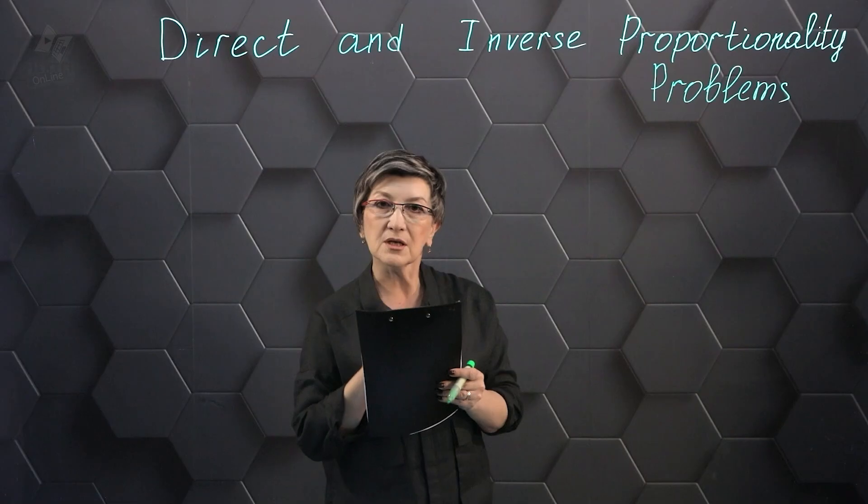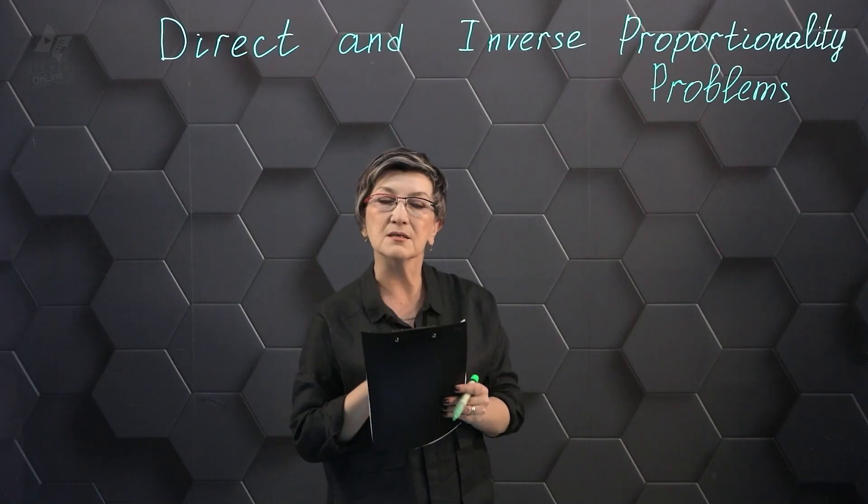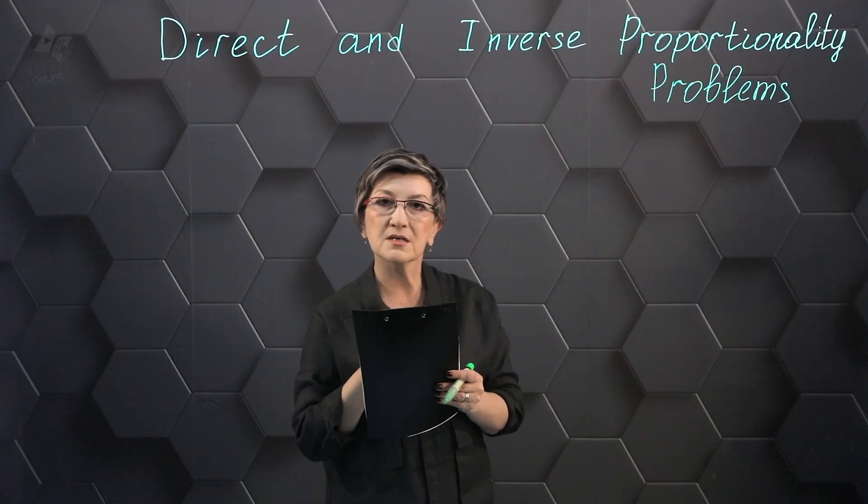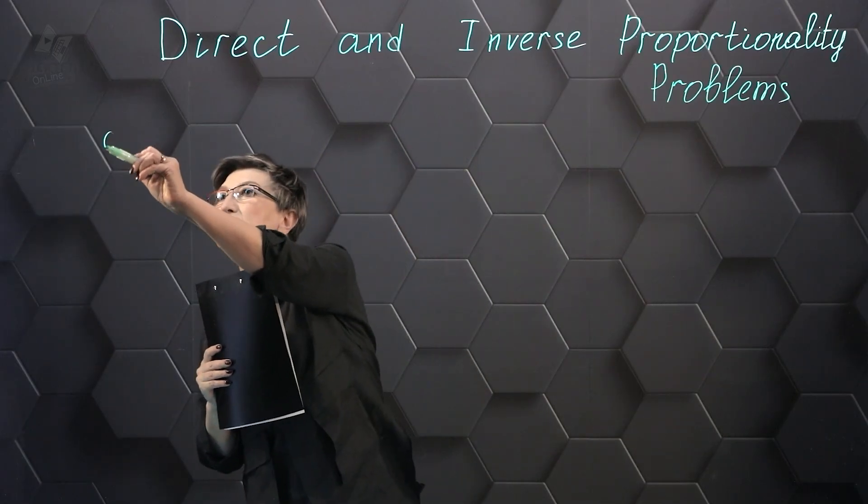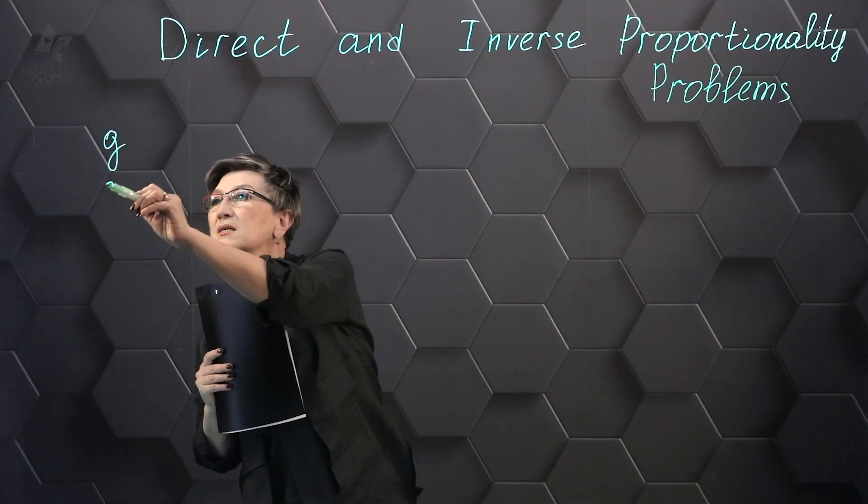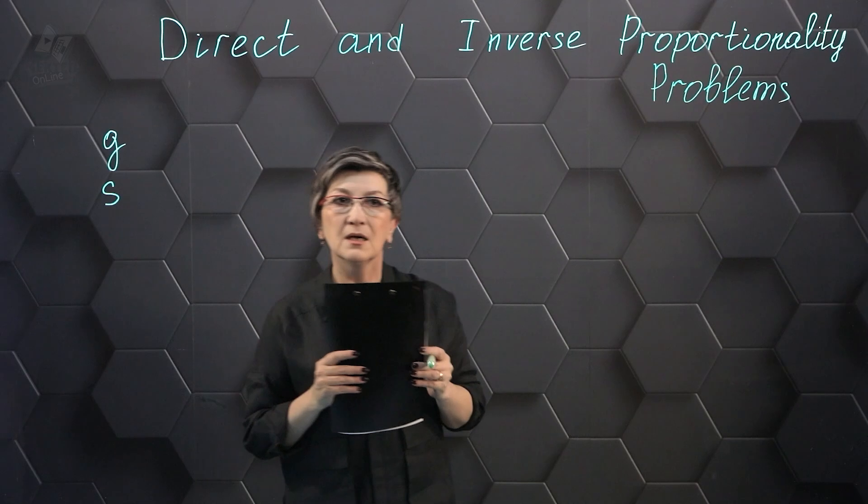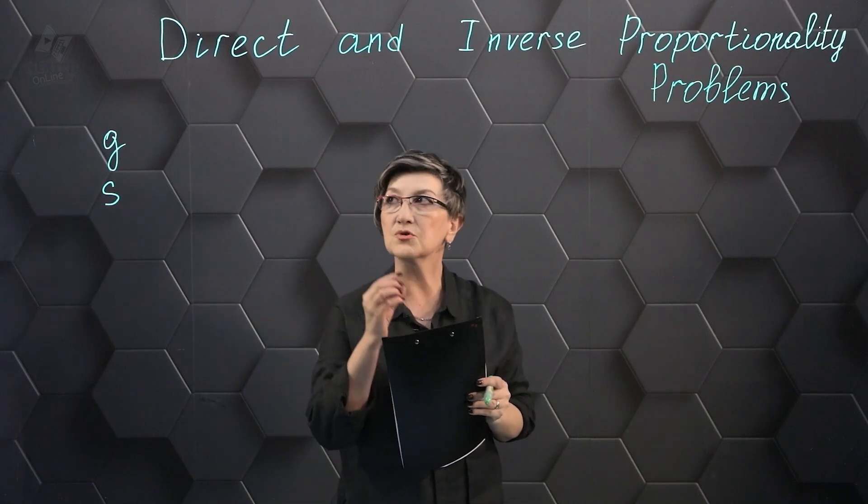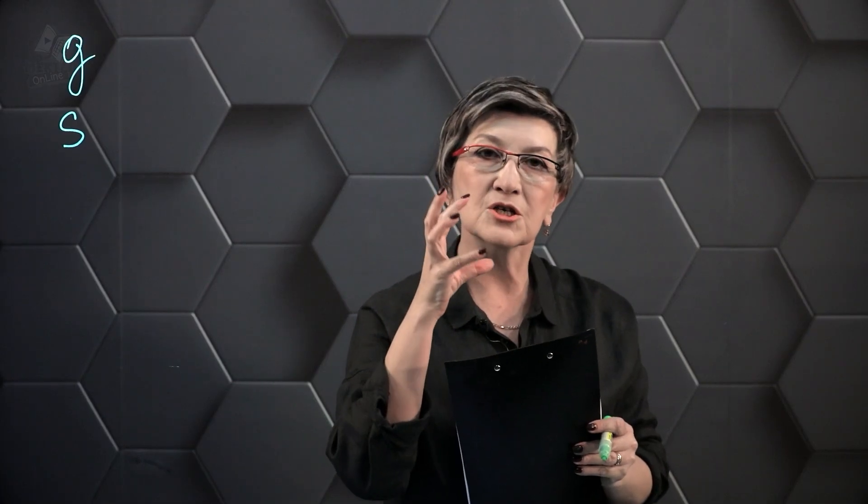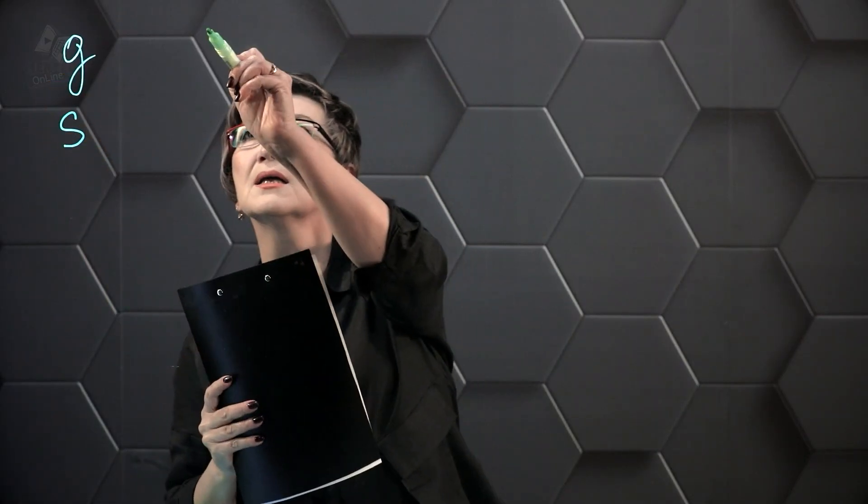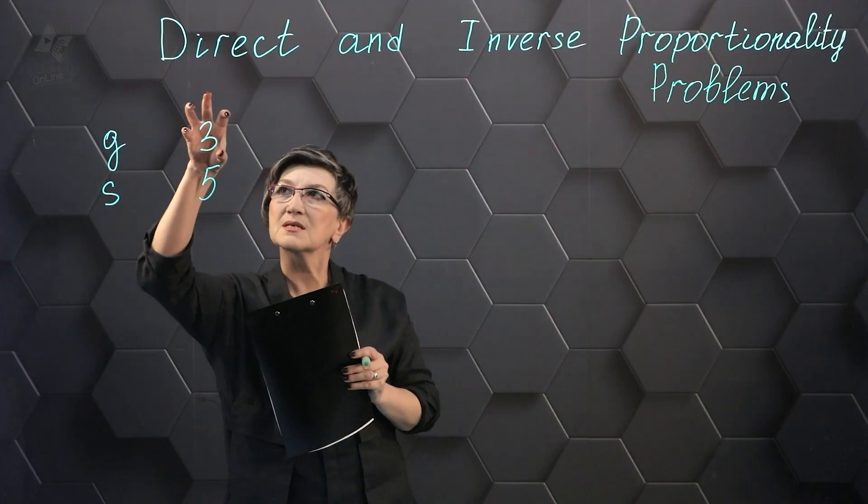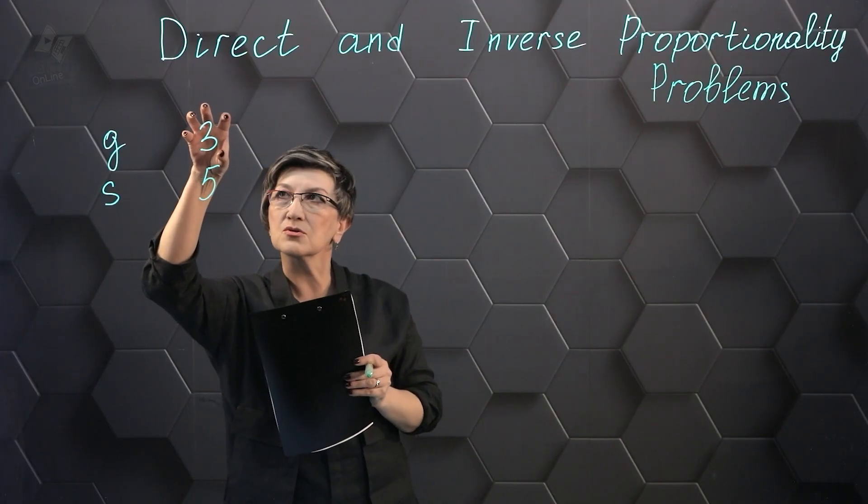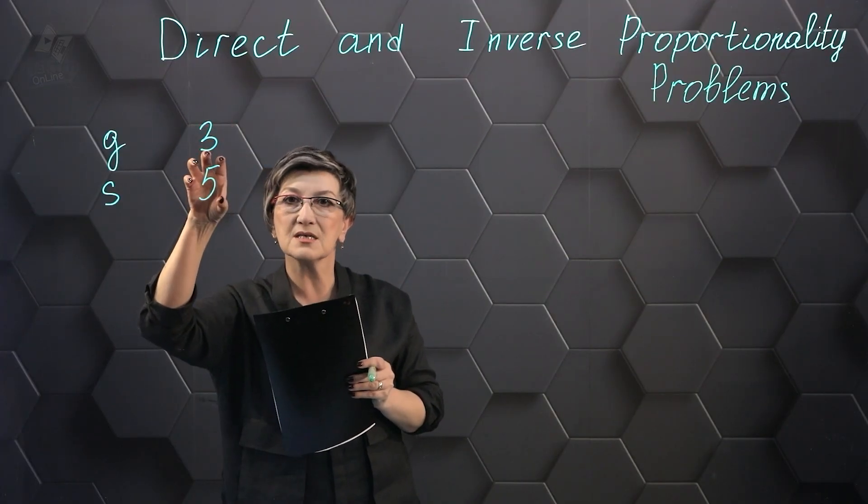In order to solve this problem, we first need to determine what the problem is about. This problem is about the mass of gold and the mass of silver. And it says that the ratio of the mass of gold to the mass of silver is 3 parts to 5. There are 3 parts of gold and 5 parts of silver in this alloy.